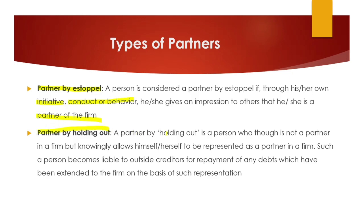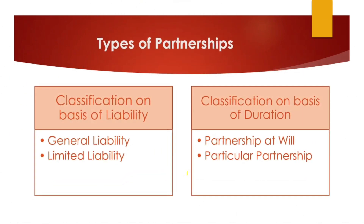Partner by holding out is the next type. A partner by holding out is a person who is not actually a partner of a firm but knowingly represents himself as a partner. He knows he is not a partner but still represents himself as one. Such a person becomes liable to outside creditors for repayment of any debts extended to the firm on the basis of such representation.